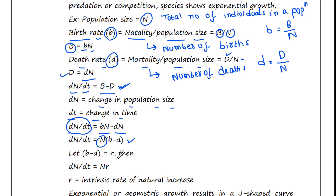Let b minus d equal r. Then dN/dt equals Nr. So r is the intrinsic rate of natural increase.